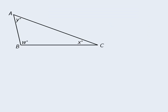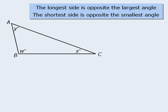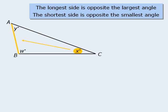Another important feature about triangles is that a triangle's longest side is always opposite its largest angle, and a triangle's shortest side is always opposite its smallest angle. So in this triangle, it appears that angle w is the largest angle, which means the side opposite angle w will be the longest side. Conversely, angle x appears to be the smallest angle, which means this side must be the shortest side.